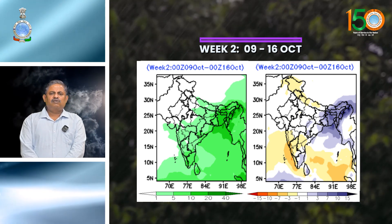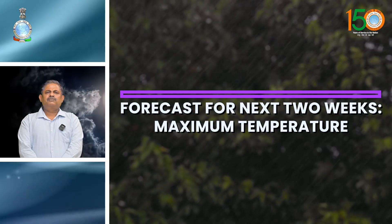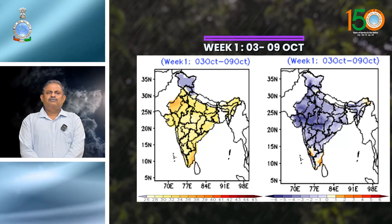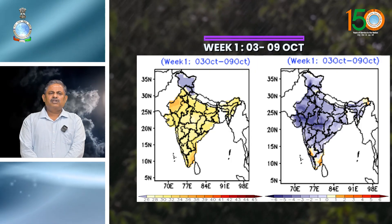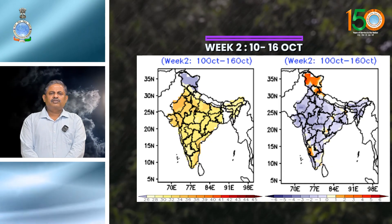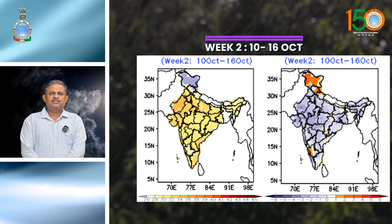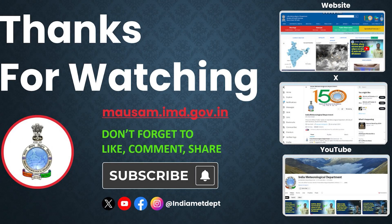For Week 2, overall rainfall activity is likely to be normal over east and northeast India and Chhattisgarh, and below normal over the remaining parts of the country. Regarding temperatures for Week 1, 2nd to 8th October, maximum temperatures are likely to be near normal or below normal over most of the country, except some parts of Tamil Nadu and south interior Karnataka where temperatures are likely to be above normal by 2 to 4 degrees Celsius. For detailed weather forecasts and warnings including fishermen and other specialized forecasts, please follow our daily weather videos, visit mausam.imd.gov.in, and download our apps. Thank you for watching. Namaskar.